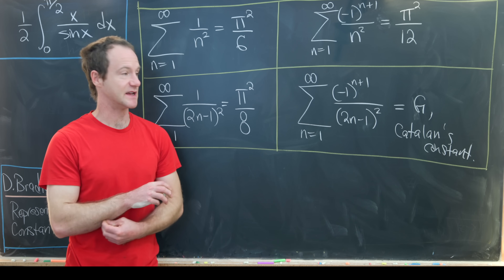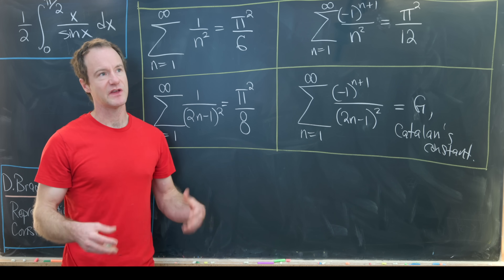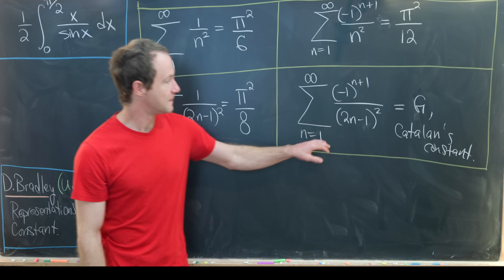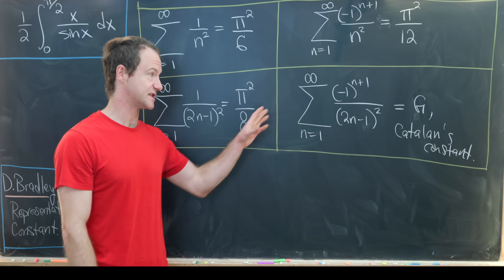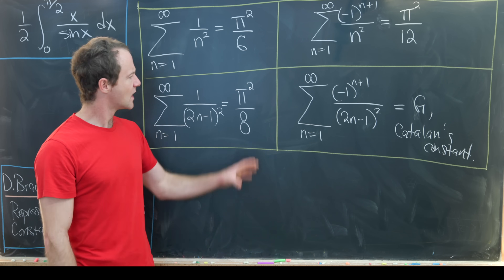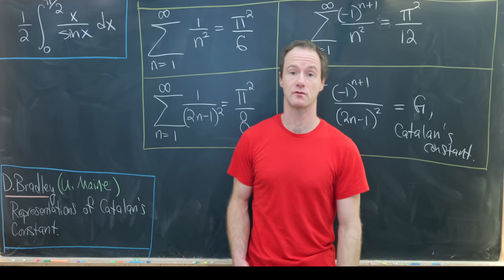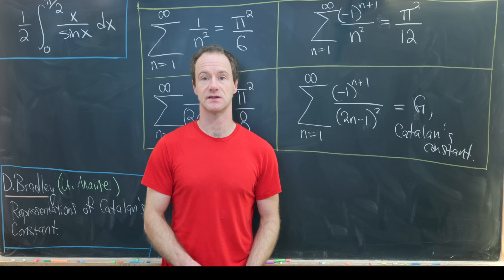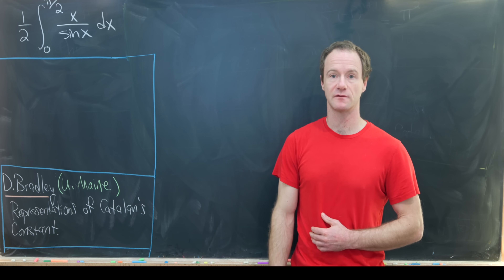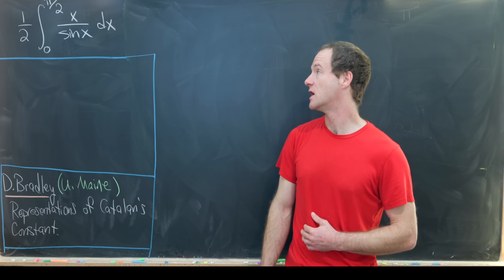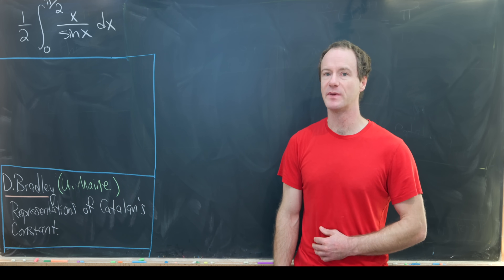Just like the Riemann zeta function evaluated at 3, 5, or odd positive integers can be thought of as important constants on their own, G — the alternating sum of the reciprocal of the odd squares — is also an important constant. Now I want to dive into a nice integral representation of this constant: we will show it equals one-half times the integral from 0 to π/2 of x over sin(x) dx. We have a bit of work to get there.